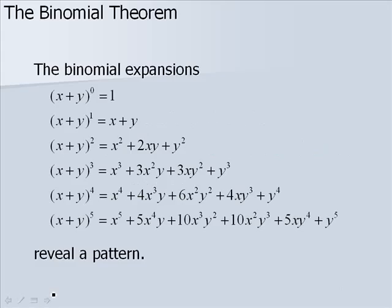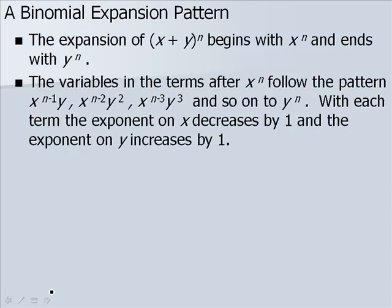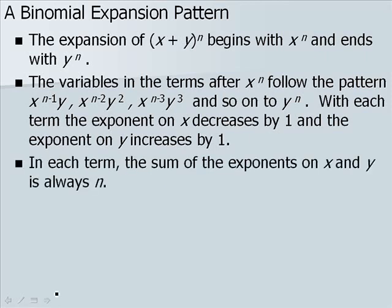The following binomial expansions begin to reveal a pattern. The expansion of x plus y to the n begins with x to the n and ends with y to the n. The variables in the terms after x to the n follow the pattern x to the n minus 1, y; x to the n minus 2, y squared; x to the n minus 3, y cubed, and so on to y to the n. With each term, the exponent on x decreases by 1 and the exponent on y increases by 1. In each term, the sum of the exponents on x and y is always n.